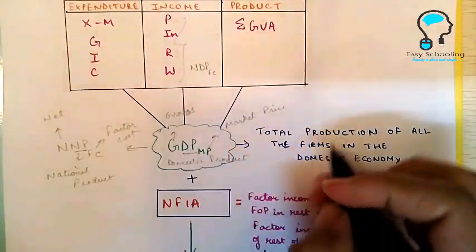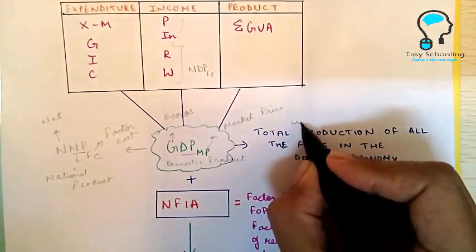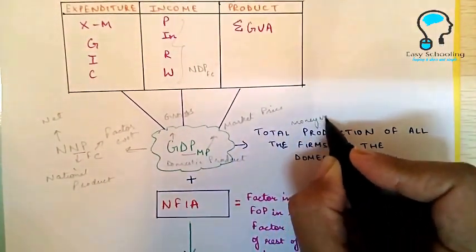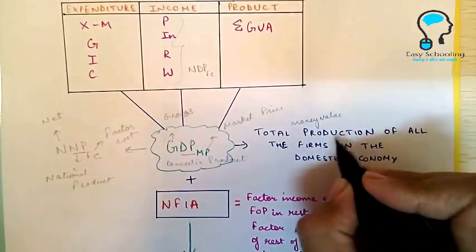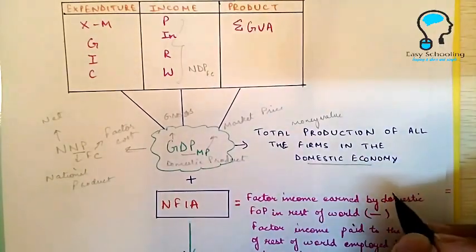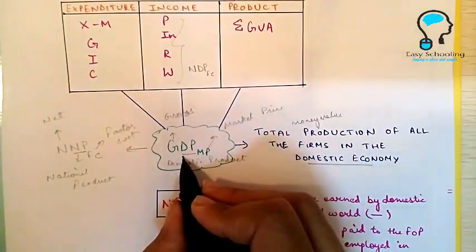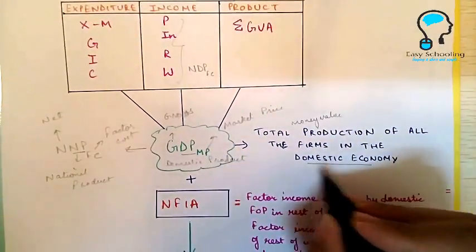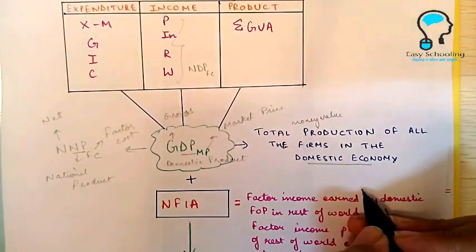Understand what GDPMP is first. What is GDP? GDP is the total money value of all the final goods and services produced in the domestic economy, that is domestic product produced in the domestic economy within the domestic territory of a place.